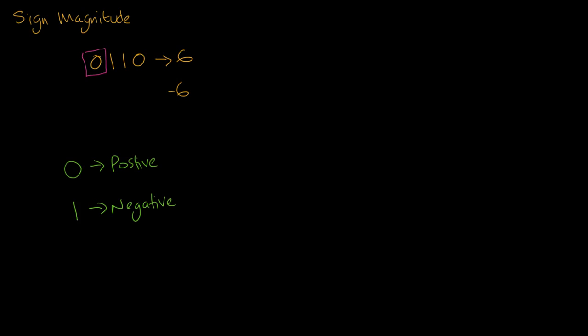So to get to minus 6, what we do is we say we want it to be a negative, so it's going to be a 1. And then we just carry the numbers through, so 1, 1, 0. So this value here says that it is a negative number.